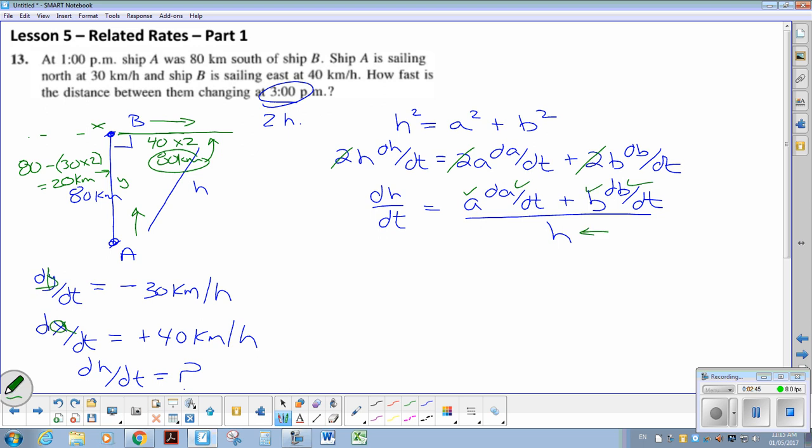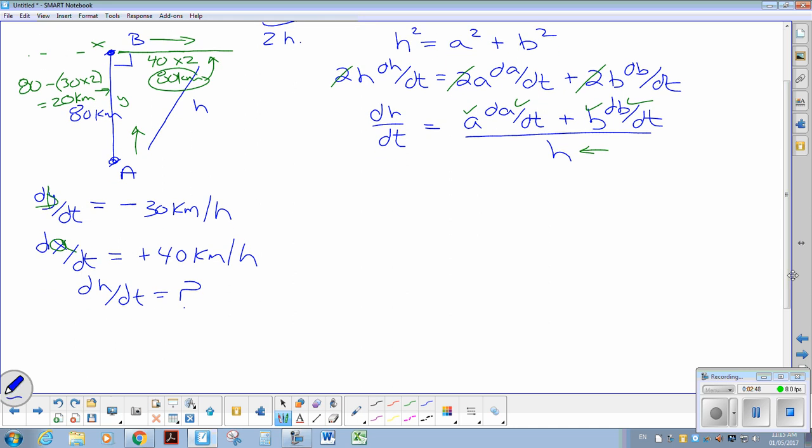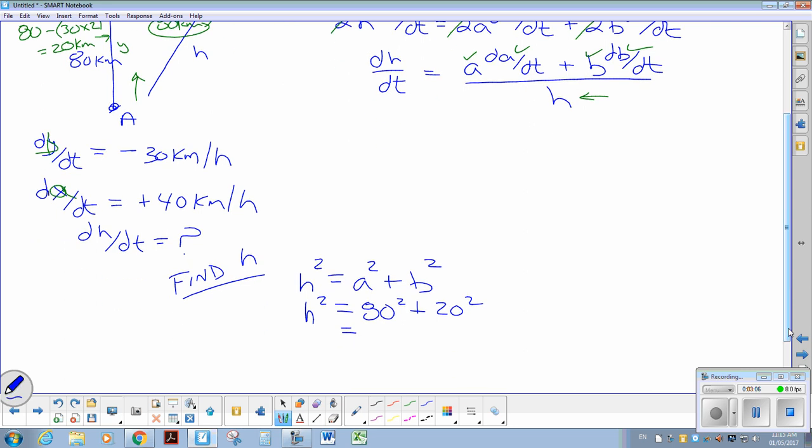So that means I'm going to have to use the Pythagorean identity. So down below, we're going to find H. So H squared equals A squared plus B squared. H squared equals, so it would be 80 squared plus 20 squared. So 80 squared plus 20 squared, and let's just square root the answer right away. So we find that the hypotenuse at that point in time is 82.5 kilometers approximately. So there is the value.